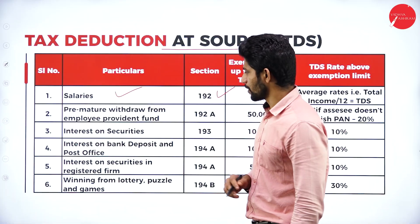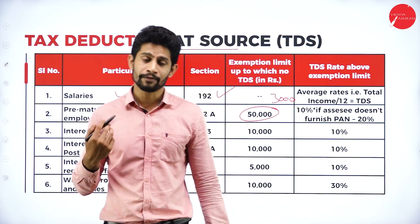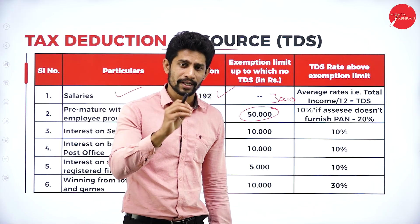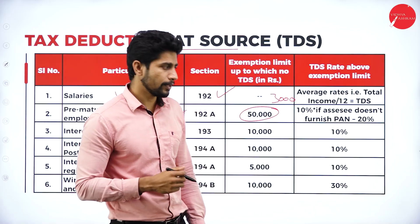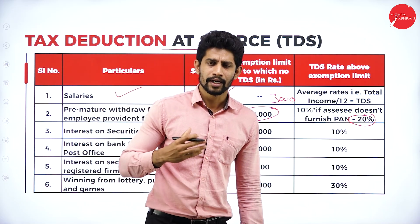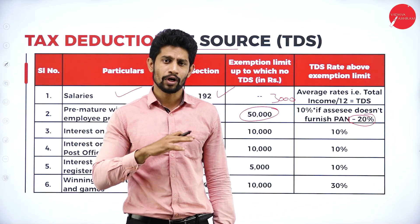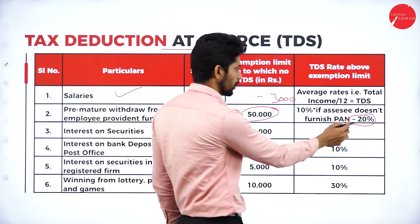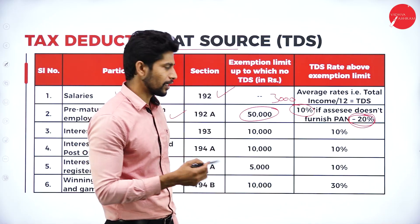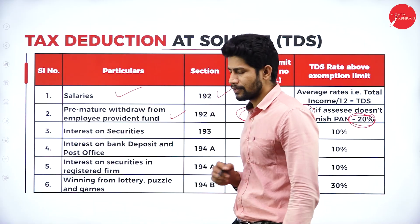For premature withdrawal from an employee provident fund: if you are withdrawing more than 50,000 rupees and you provide the PAN card, 10 percent TDS is deducted. If you do not provide the PAN card, 20 percent is deducted. If you are withdrawing less than 50,000 rupees, no TDS is applicable on those withdrawals.